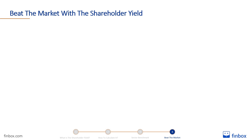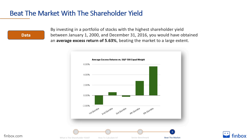By investing in a portfolio of stocks with the highest shareholder yield between January 1st, 2000 and December 31st, 2016, you would have obtained an average excess return of 5.63%, beating the market to a large extent. At the same time, if you had invested in the first quintile of stocks with the lowest shareholder yield, you would have underperformed the market.